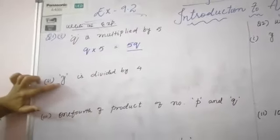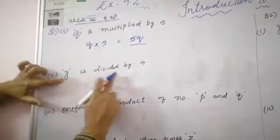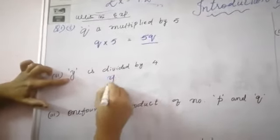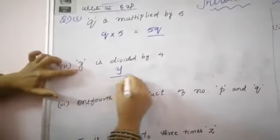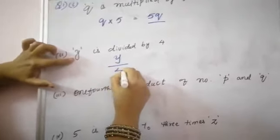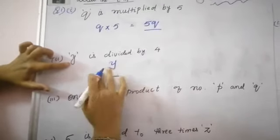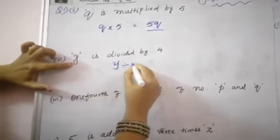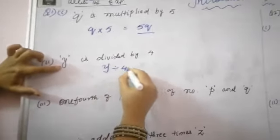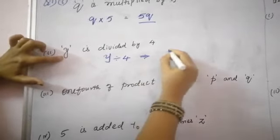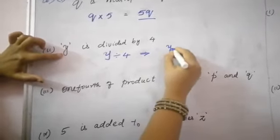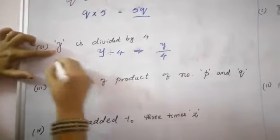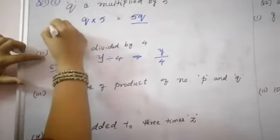Next: Y is divided by 4. You can write it as Y divided by 4, or you can write this as Y by 4. So this is your solution.